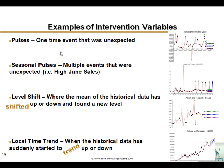Here are examples of different types of interventions. You can see a thumbnail of a pulse — a very low value. If that value is left uncorrected in the model, the forecast will be skewed by that outlier. AutoBox identifies and corrects for seasonal pulses, level shifts, and local time trends as well.